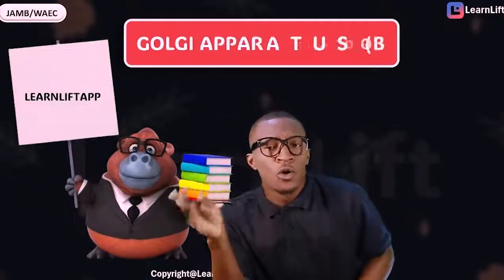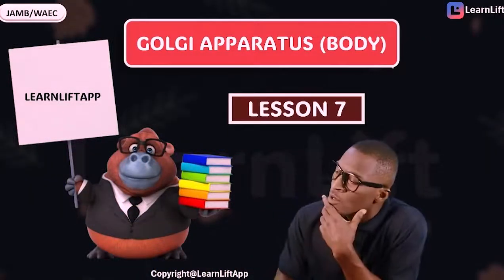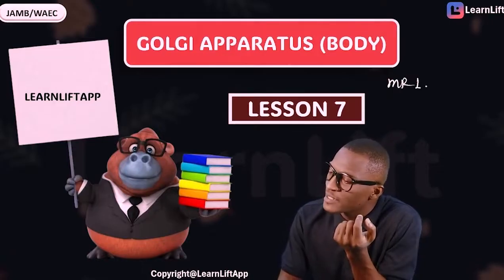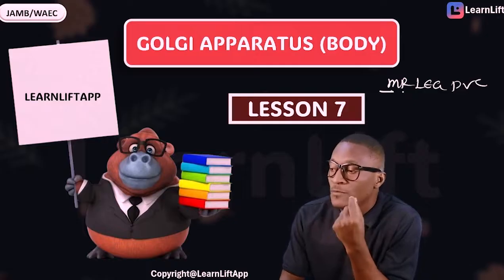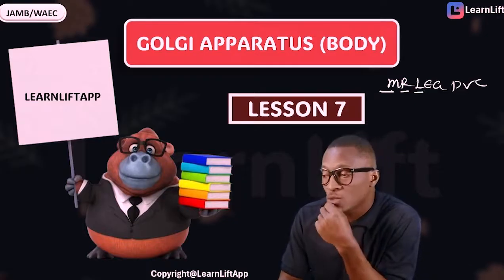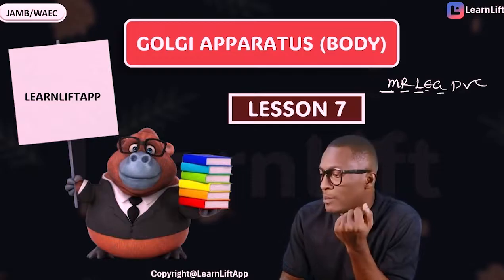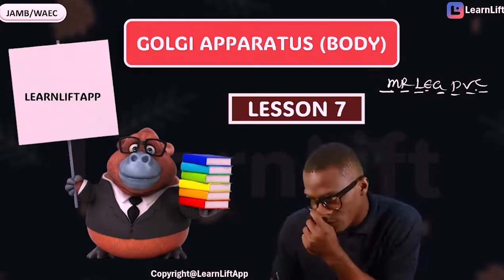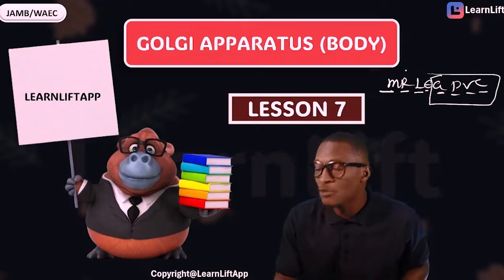Let's now talk about the Golgi apparatus — this will be our lesson seven. We've talked about the content of the cell, mitochondria, ribosome, and lysosome. Now let's talk about the Golgi apparatus, plastids, vacuole, and centrosome. We're going to cover all of this in this class.